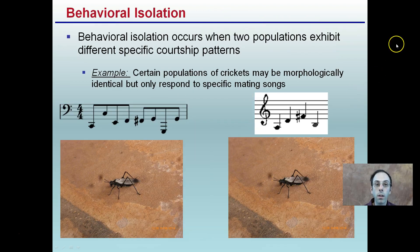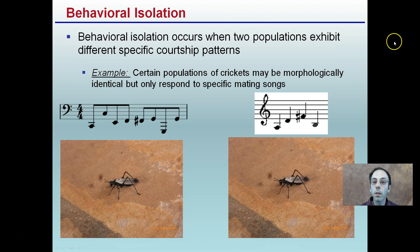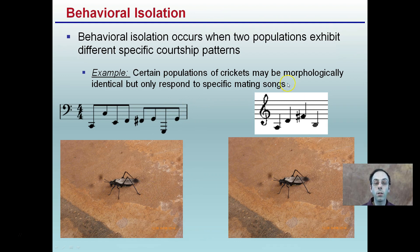Behavioral isolation occurs when two populations exhibit different courtship patterns. We have two crickets here, and certain populations produce different mating songs. A mate is only going to find the proper individual that has the right song. If an individual is producing a different tune, song, or ritual, they will not be selected as a mate for that particular population. The behaviors an individual exhibits can result in its isolation.